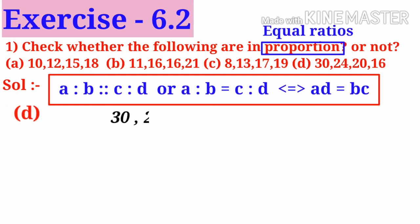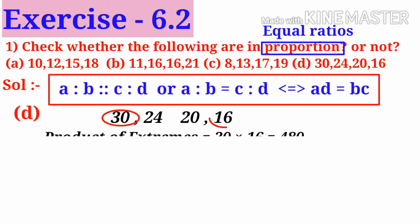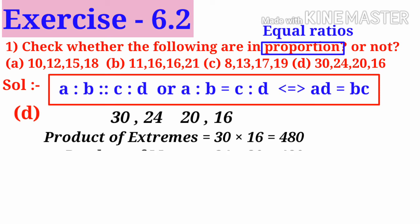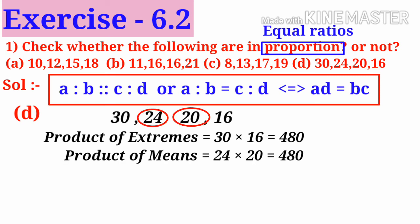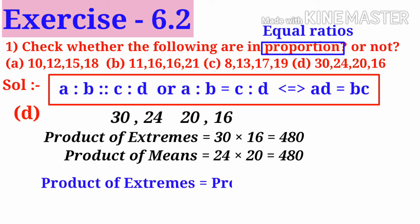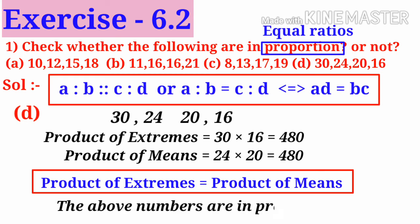Next D: 30, 24, 20, 16. Take the extreme values 30 and 16. Take the product: 30 into 16 is 480. Now take the middle terms 24 and 20. 24 into 20 is 480. These values are equal. So product of extremes is equal to product of means. So the above numbers are in proportion.